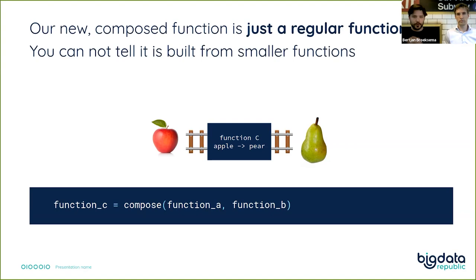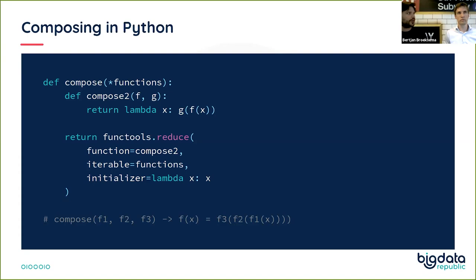How would you do this in Python? You have function C, which is a composition of function A and function B. You write a compose function using functools.reduce. If you compose F1, F2, and F3, it creates a function that calls F3 over F2 over F1, which you can then call over any input you want. Pretty straightforward to write in Python. But this is still the happy path — we haven't talked about errors yet.